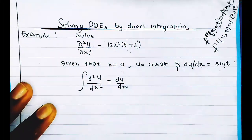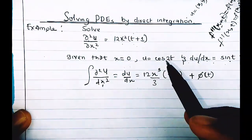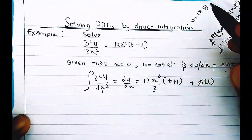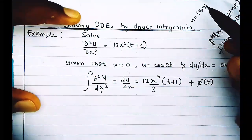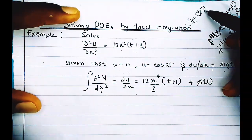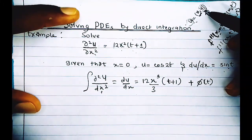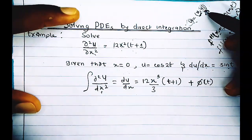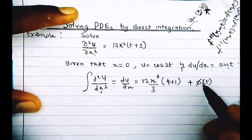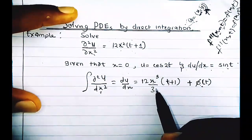When integrating with respect to a particular variable, the other variable is assumed to be constant. For example, if u is a function of x and y and we integrate with respect to x, then y is assumed constant. Any constant introduced after the integration will be a function of y. Since we are integrating with respect to x and we have another variable t, the constant introduced will be a function of t.